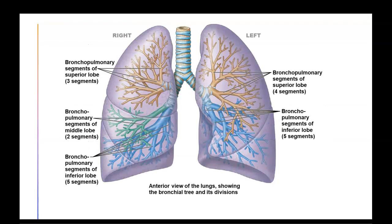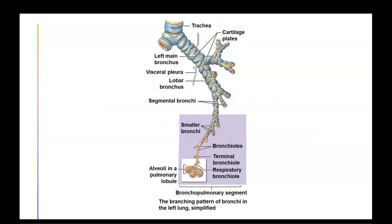The right lung is divided into three lobes and the left lung into two lobes, each with bronchopulmonary segments. Moving from largest to smallest: trachea, left main bronchus, segmental bronchi, then progressively smaller airways — primary, secondary, tertiary — down to terminal bronchioles, then respiratory bronchioles, and finally the alveoli.